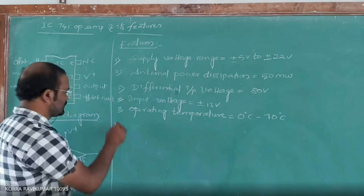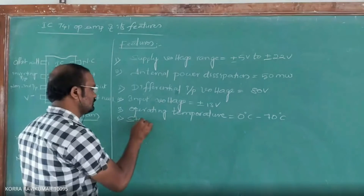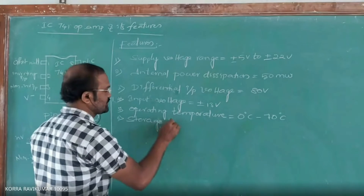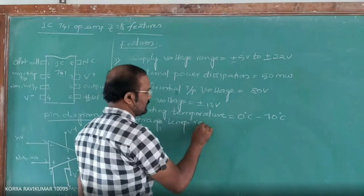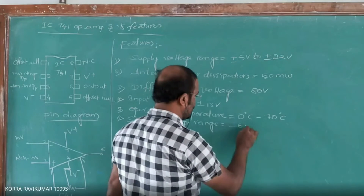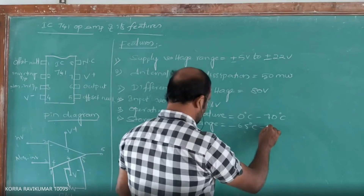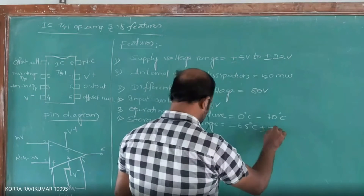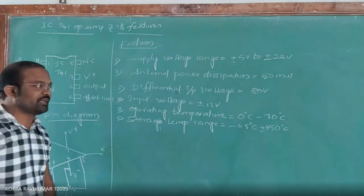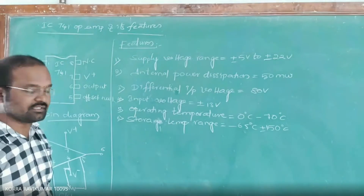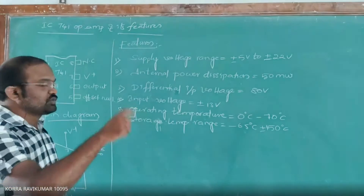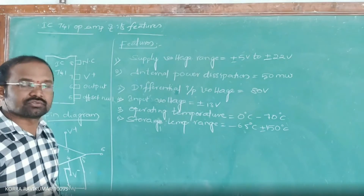The sixth specification is storage temperature range. The storage temperature range is from minus 65 degree centigrade to plus 150 degree centigrade. Within that temperature range we can store this IC 741; outside that range it will not work.